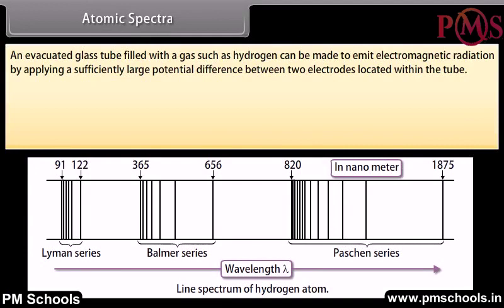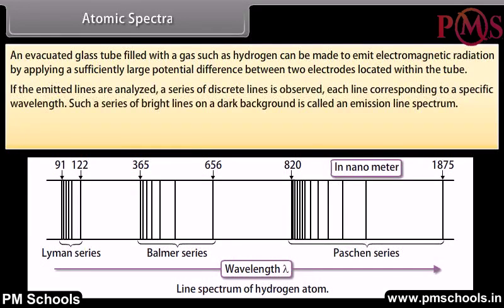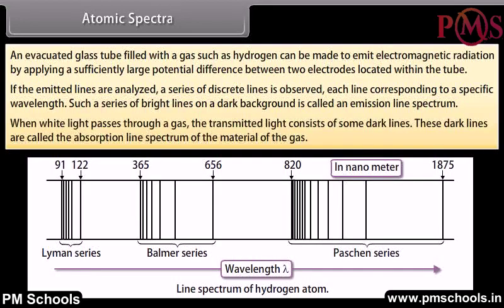Atomic spectra. An evacuated glass tube filled with a gas such as hydrogen can be made to emit electromagnetic radiation by applying a sufficiently large potential difference between two electrodes within the tube. If the emitted light is analyzed, a series of discrete lines are observed, each corresponding to a specific wavelength — called an emission line spectrum. When white light passes through a gas, the transmitted light contains dark lines called the absorption line spectrum of the material.